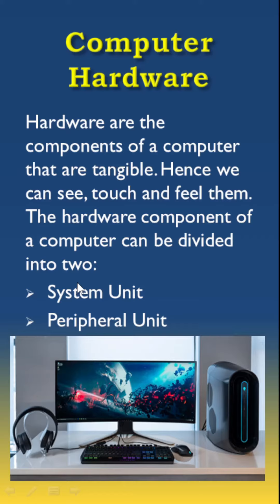The hardware components of a computer can be divided into two: the system units and the peripheral units. The system unit is basically made up of the CPU, which is the central processing unit, and the primary memory like the RAM. Those two basically make up the system units.